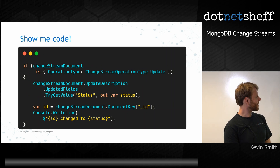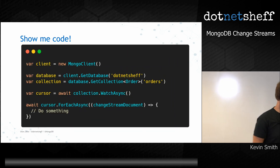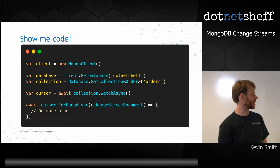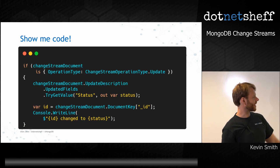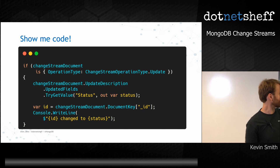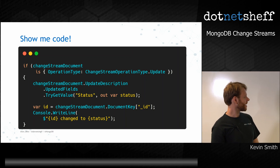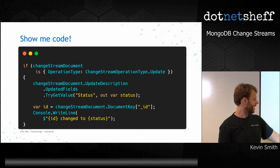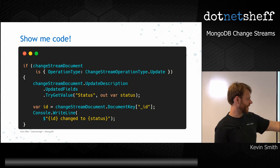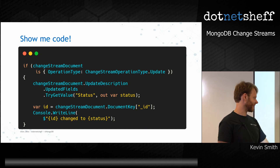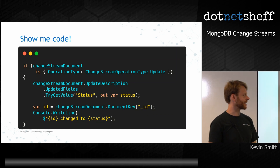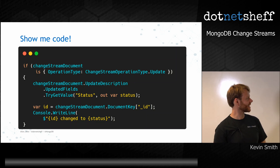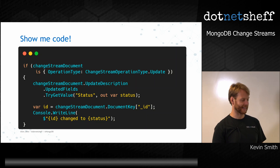Inside the change stream document, the method that gets a change stream document has a bunch of extra properties. You can say where the operation type is 'updated', drop into that block, and it has an update description with updated fields. You can say go get the field of 'status' and parse it back out. You can also get the document key and write a console log saying the ID changed to this status — so you can listen to order status changes with a query like this.